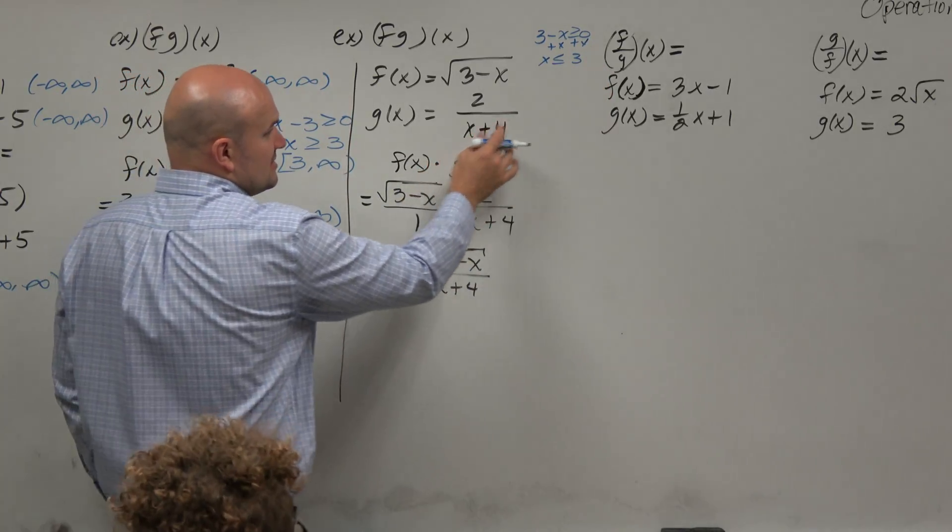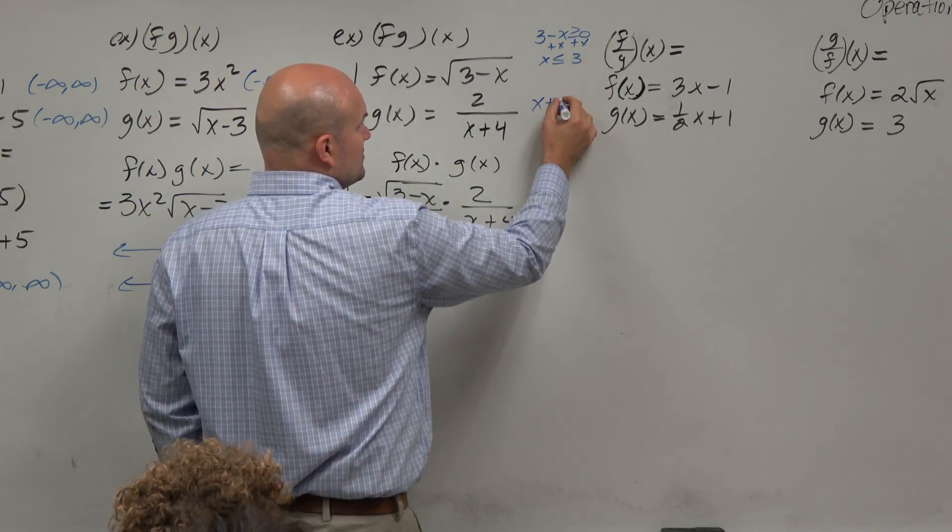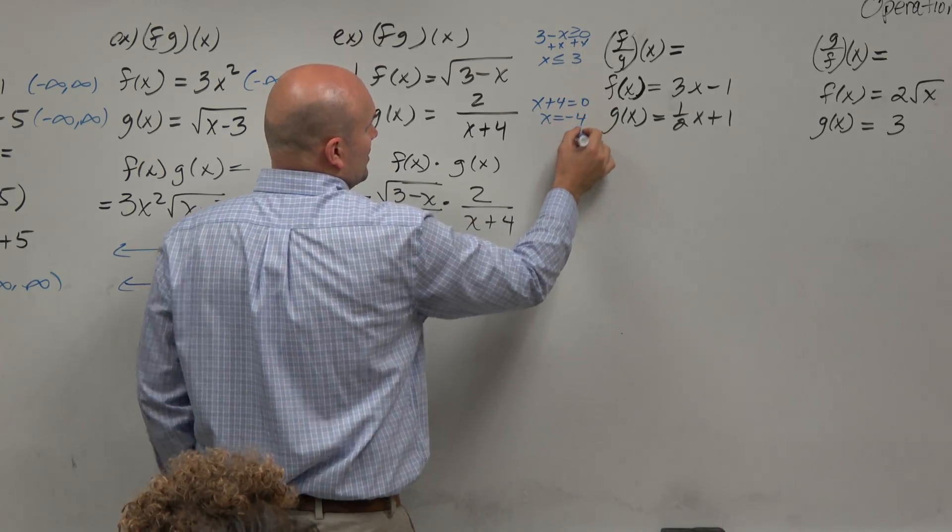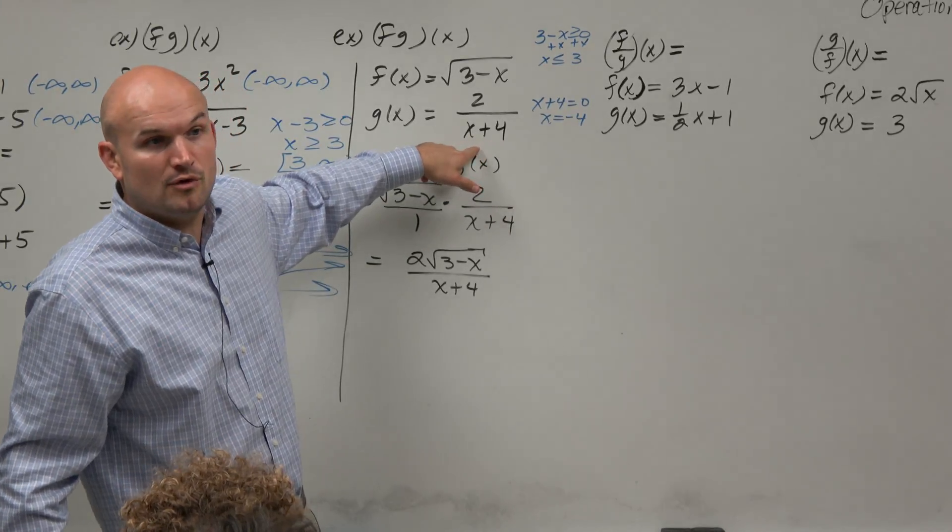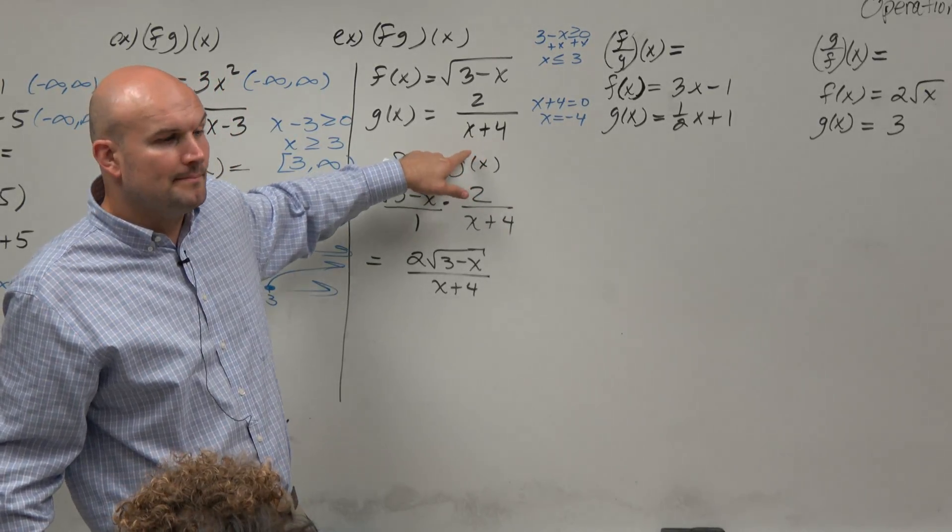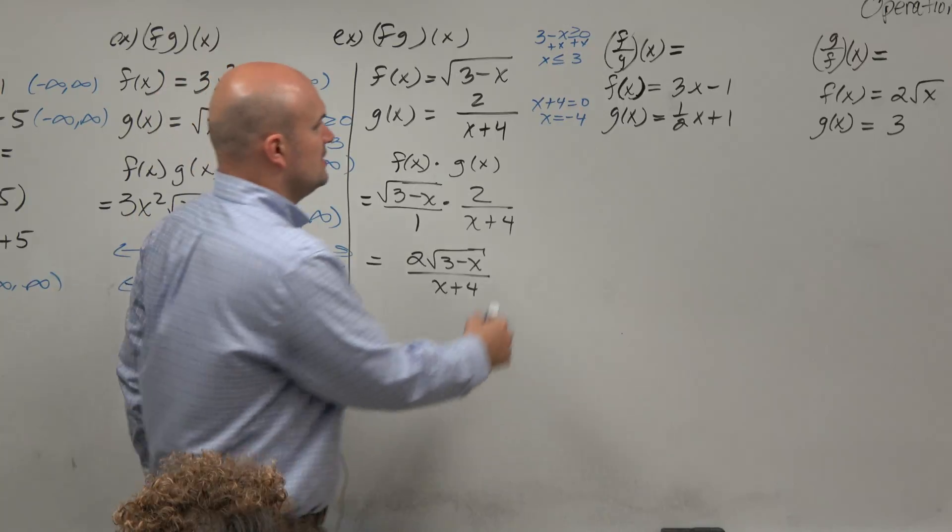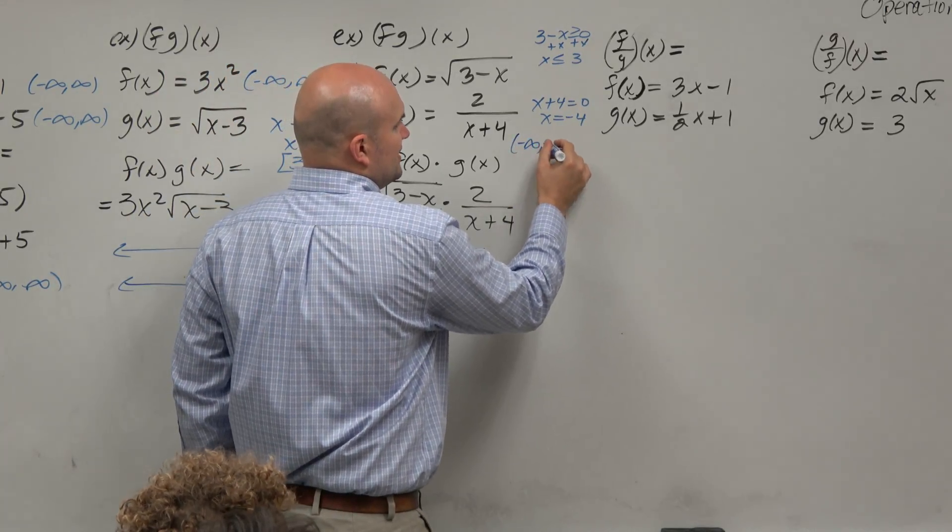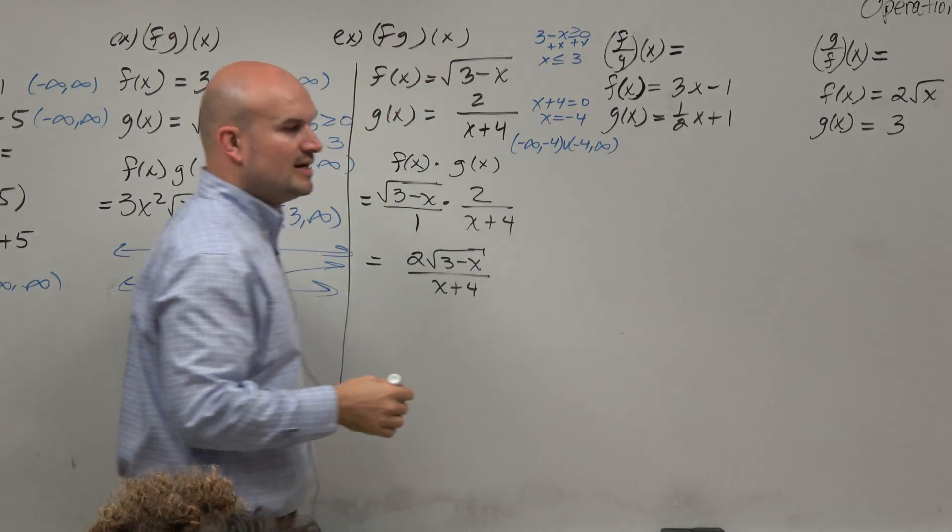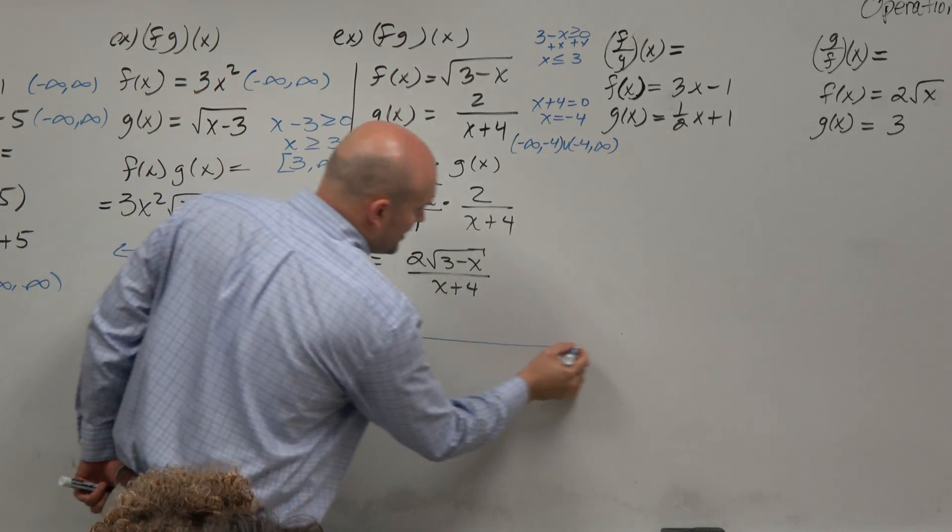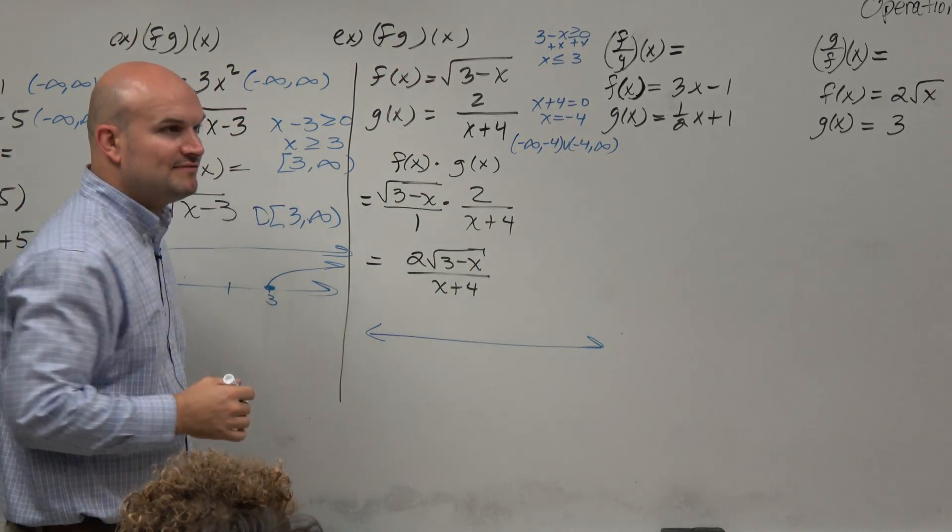And then for this, you set the denominator equal to 0, and you have x equals negative 4. This means all numbers are in the domain except for negative 4, because negative 4 is what makes the denominator 0. So this domain would be written as negative infinity to negative 4, union negative 4 to infinity. I'm talking about that a little bit quicker because we've already covered that. But anyways, let's graph the two domains.